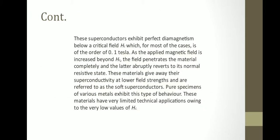These superconductors exhibit perfect diamagnetism below a critical field Hc, which for most cases is of the order of 0.1 tesla. As the applied magnetic field is increased beyond Hc, the field penetrates the material completely and the latter abruptly reverts to its normal resistive state. These materials give away their superconductivity at lower field strengths and are referred to as soft superconductors. Pure specimens of various metals exhibit this type of behavior.